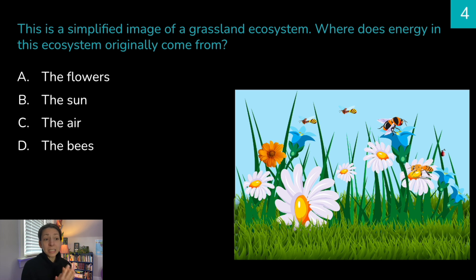All right last up. This is a simplified image of a grassland ecosystem. Where does energy in this ecosystem originally come from? a flowers, b the sun, c the air, or d the bees. Think about it. Correct answer is b the sun. Now most food chains and food webs rely on the sun as the ultimate source of energy on planet earth. Now we do have other food chains like ones involving deep sea bacteria that rely on chemosynthesis in order to harness energy. But the majority of food webs and food chains that we'll encounter, especially the ones on land, are going to be powered by the sun.